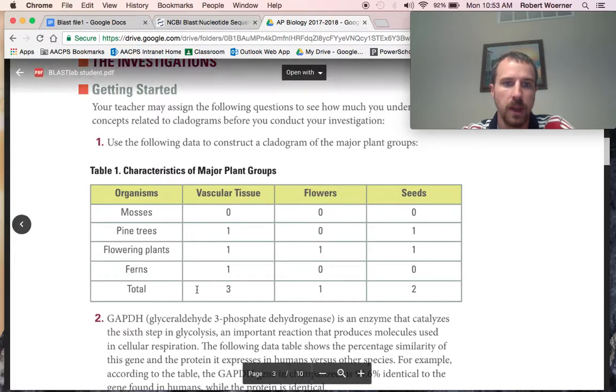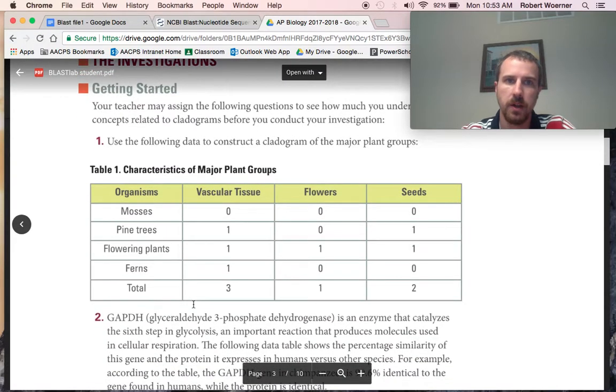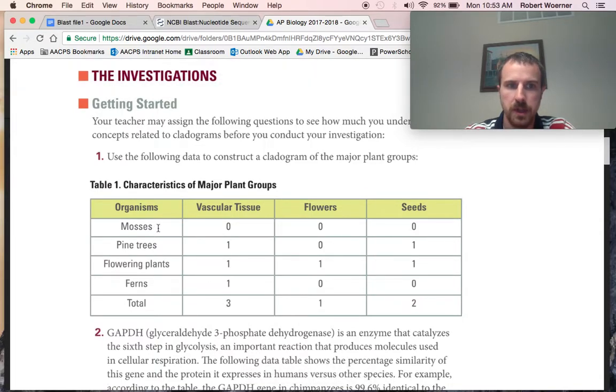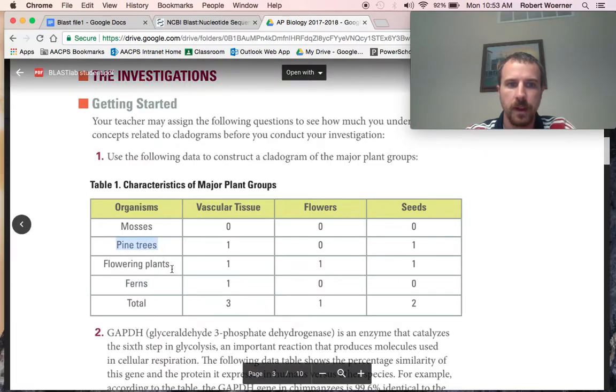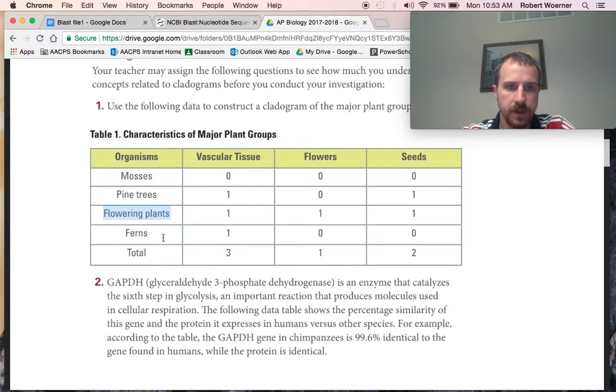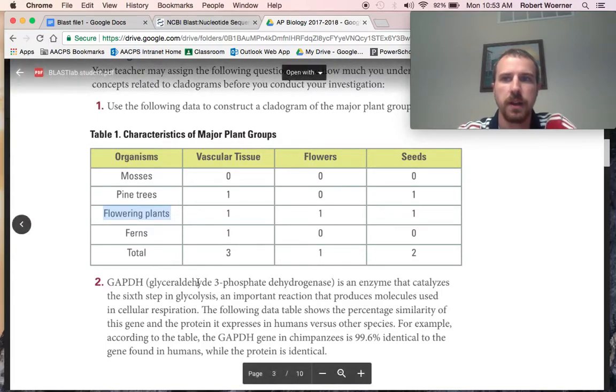So if we build our cladogram from that, we'll see that the first most simple creature or organism is the moss. The next most simple creature is the fern. And then the pine tree. And finally the flowering plants. So your cladogram should go mosses, ferns, pine trees, flowering plants, putting the vascular tissue, flowers, and seeds in their respected order.